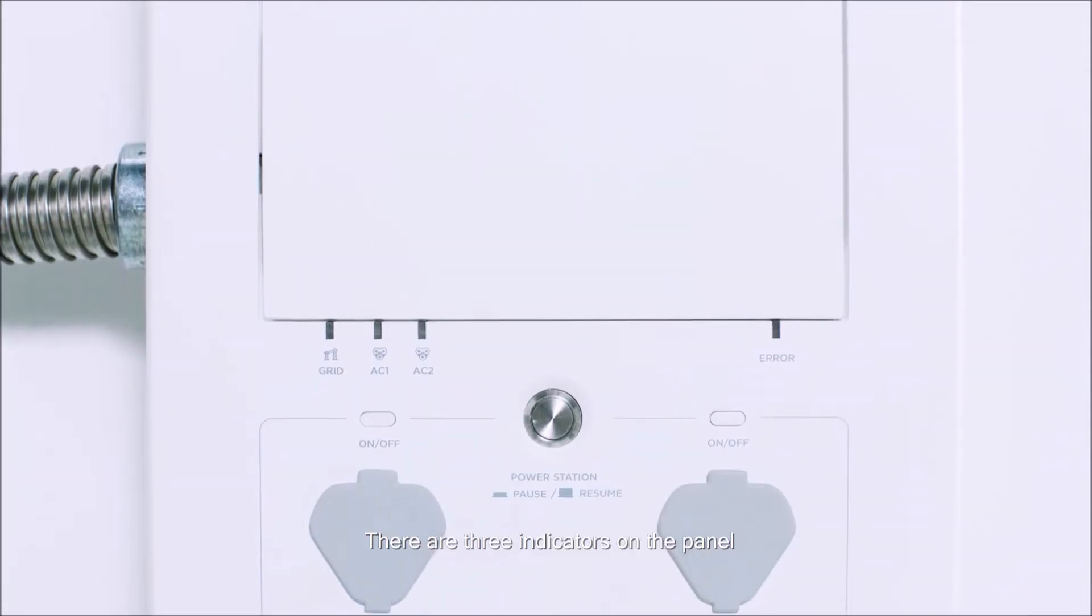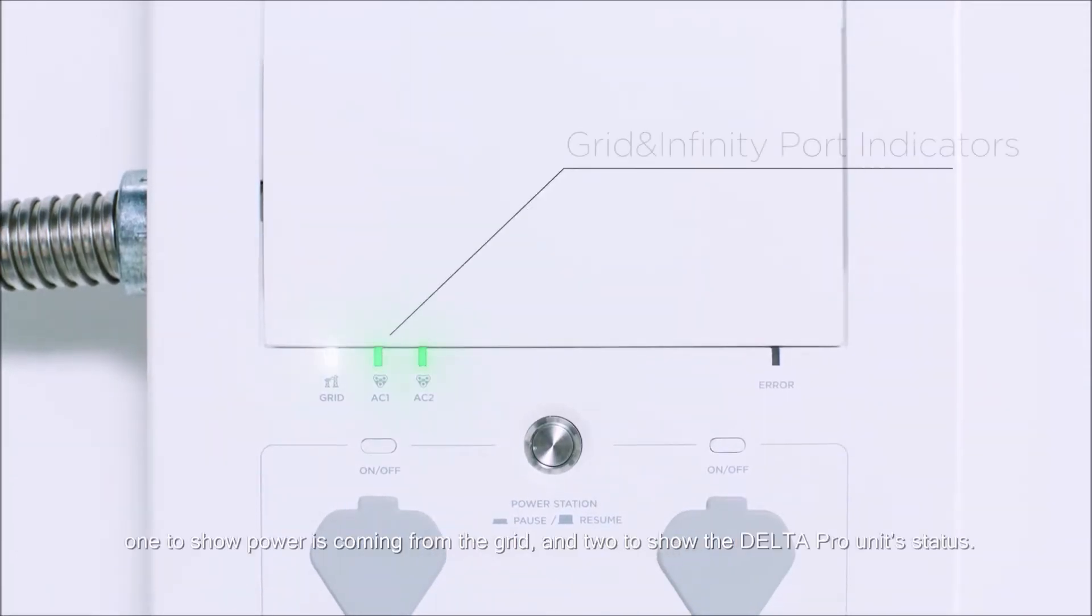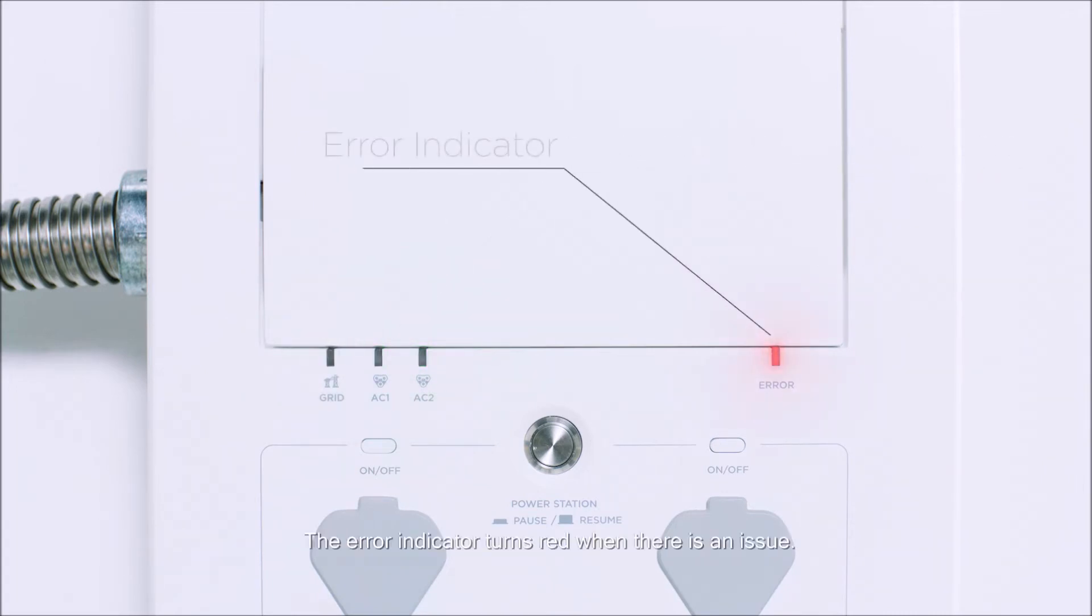There are three indicators on the panel, one to show power is coming from the grid, and two to show the Delta Pro unit status. The error indicator turns red when there is an issue.